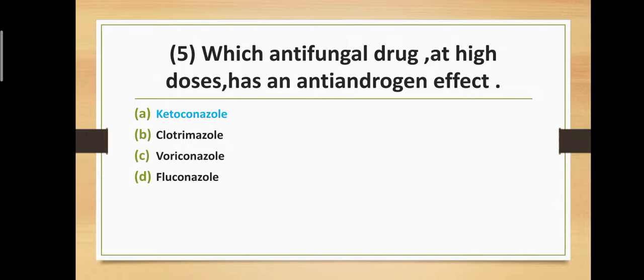Question number five: Which antifungal drug at high doses has an antiandrogen effect? Option A: ketoconazole, Option B: clotrimazole, Option C: orconazole, Option D: fluconazole. The correct answer is Option A — ketoconazole at high doses has an antiandrogen effect.